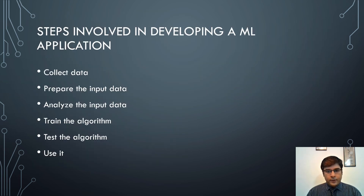The steps involved in developing a machine learning application are: first, collect the data; second, prepare the input data in the right format; third, analyze the input data to get refined data; fourth, train the algorithm by developing the model; fifth, test the algorithm on testing data; and finally, use it in a live environment.